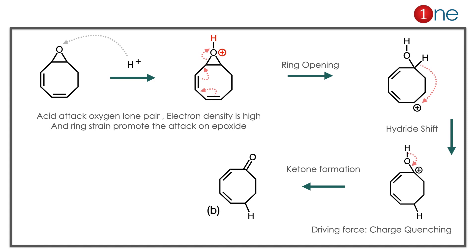Let us see how. You have acid — H+ from perchloric acid attacks the oxygen, not the double bond, because electron density on oxygen is high. This generates a charge that must be quenched. The electrons in the ring move and quench the charge by ring opening. The positive charge shifts to the alkene carbon, forming a cation. A hydride shift occurs because there is an alcohol that can quench it — hydrogen moves.